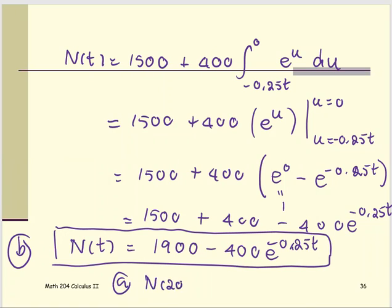Once we get the general formula, we can use it to find the answer in part A. Part A asks for N at 20. We just plug the 20 into the T, so the number that comes out is approximately 1898 cells. And then N at 40, or after 40 days, you're going to have about 1900 cells.